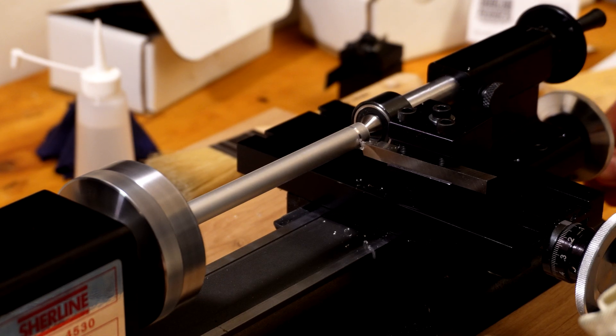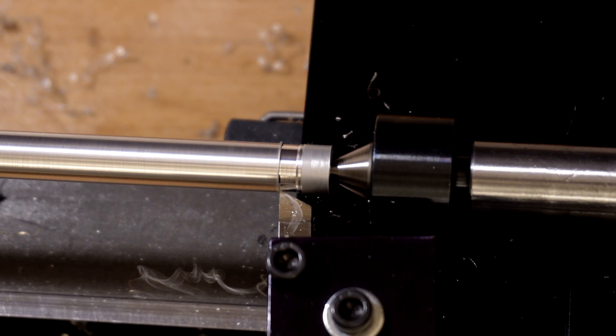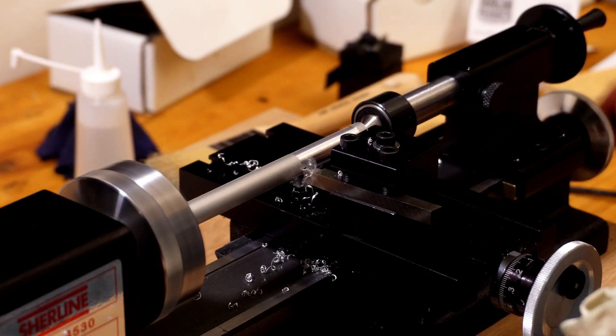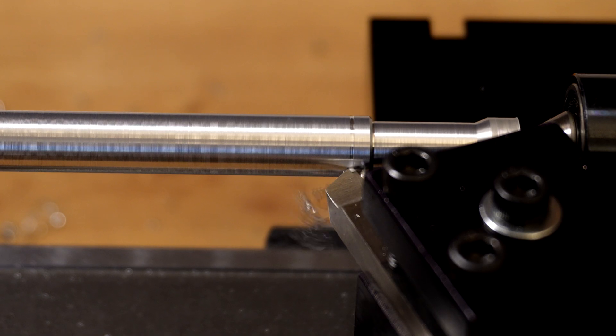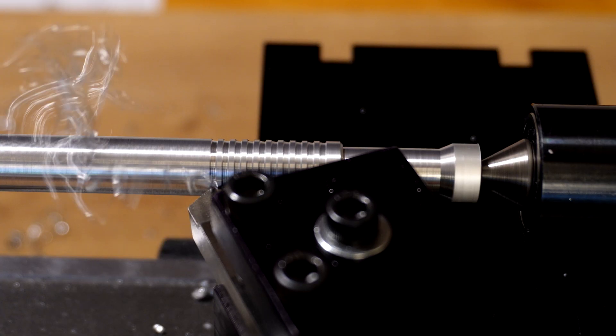Now that everything is set we can start removing material and shaping the part. For better grip we will add some small grooves where we will later hold the tool.